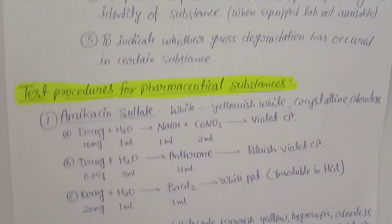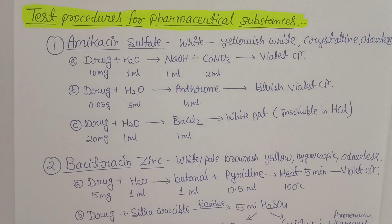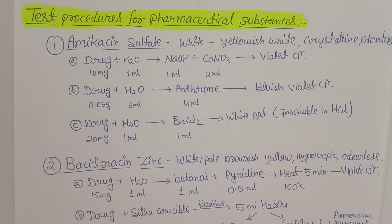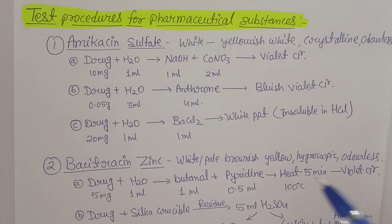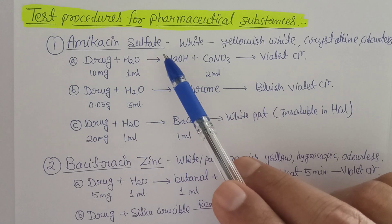In the syllabus, the first topic is the test procedure for pharmaceutical substances. For all pure pharmaceutical substances available, the aim is to find the minimum and easily applicable method for identifying or verifying the identity of the drug. These procedures are given by the WHO to check the identity and purity of pharmaceutical substances. The first drug we can discuss as an example is Amikacin Sulfate.